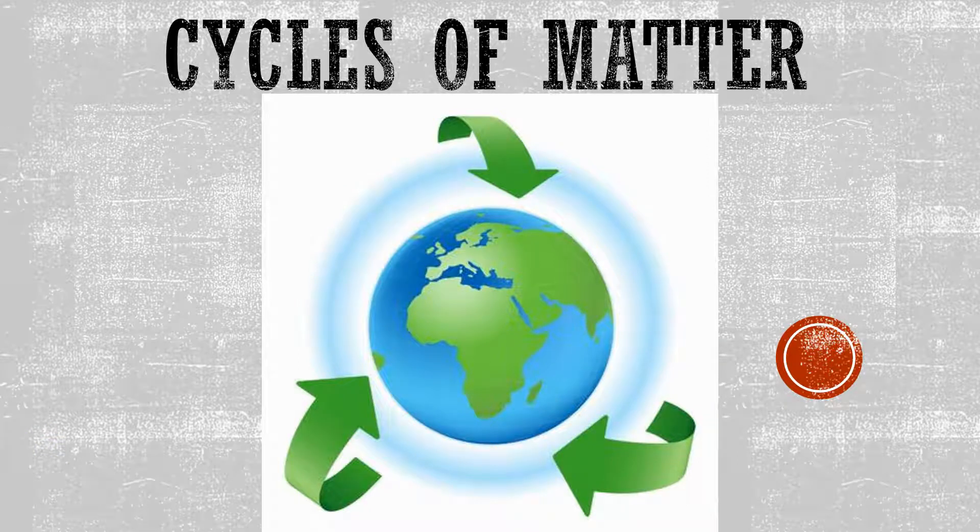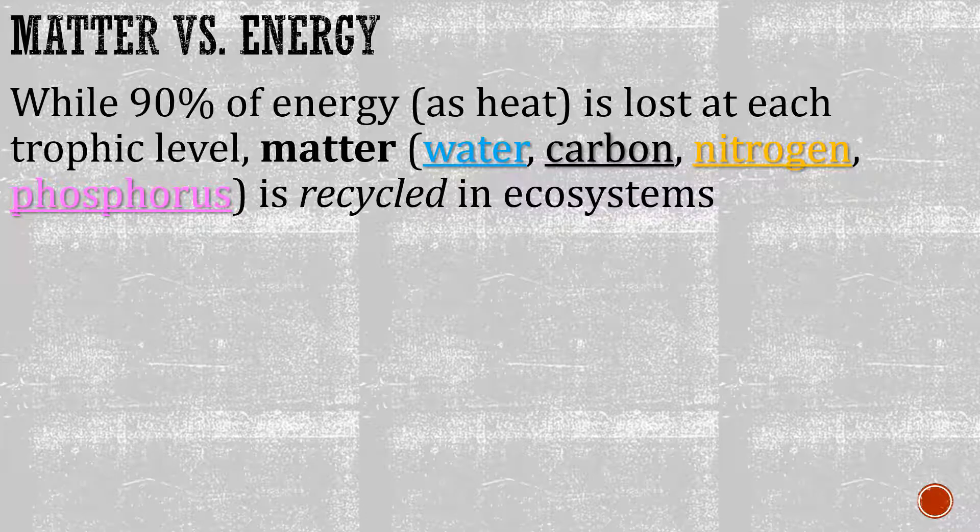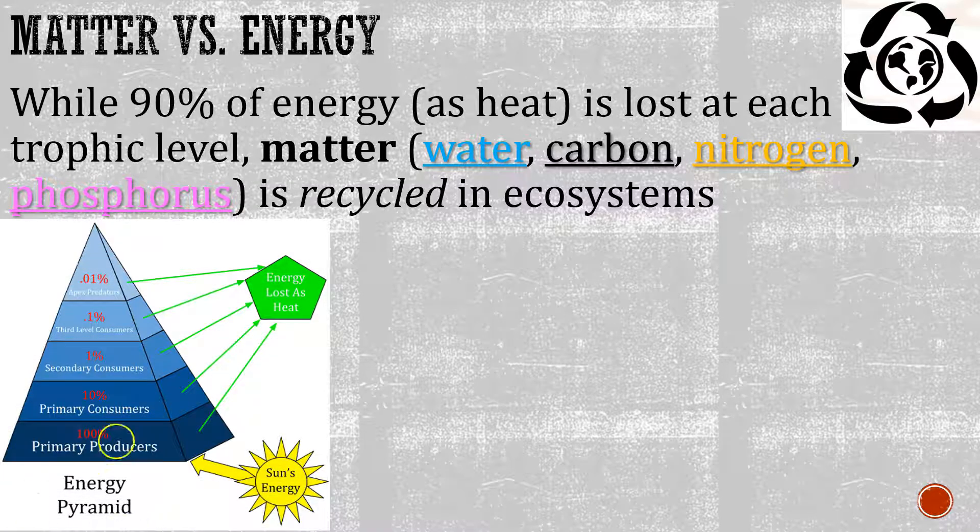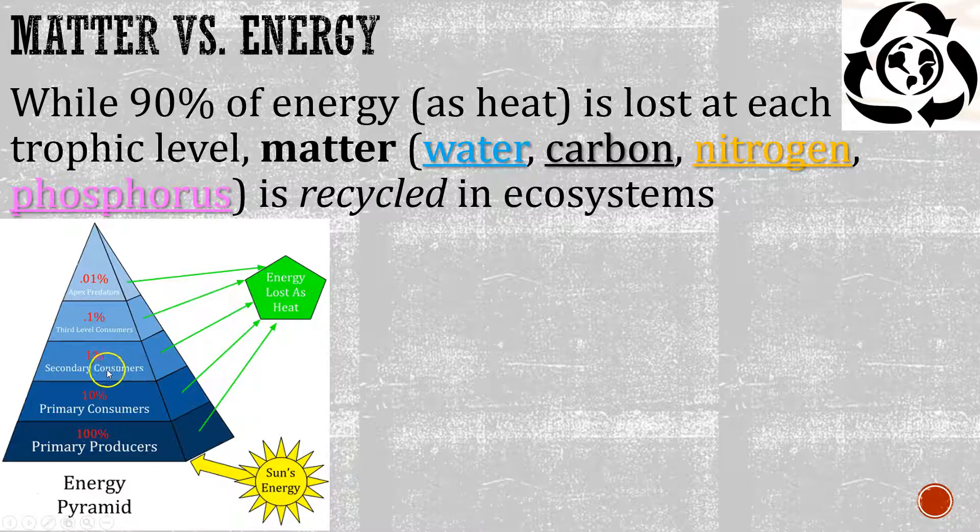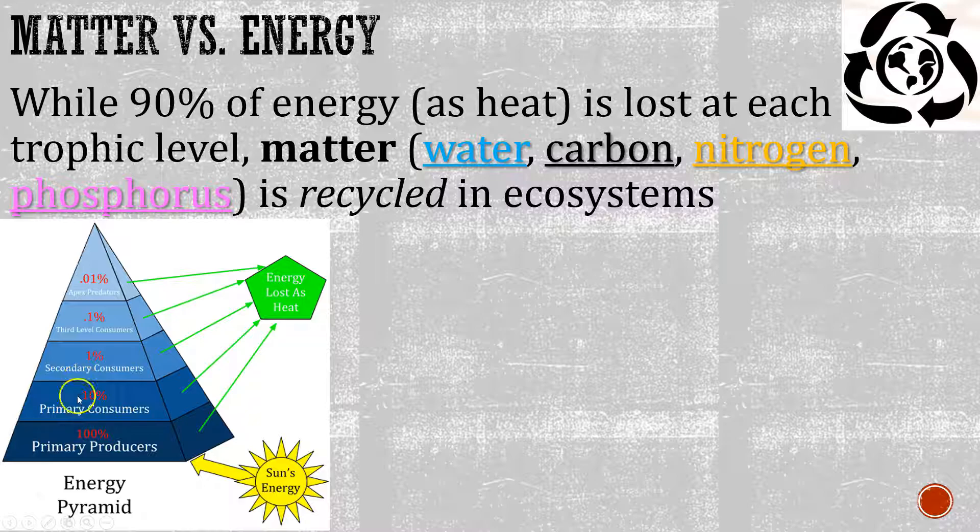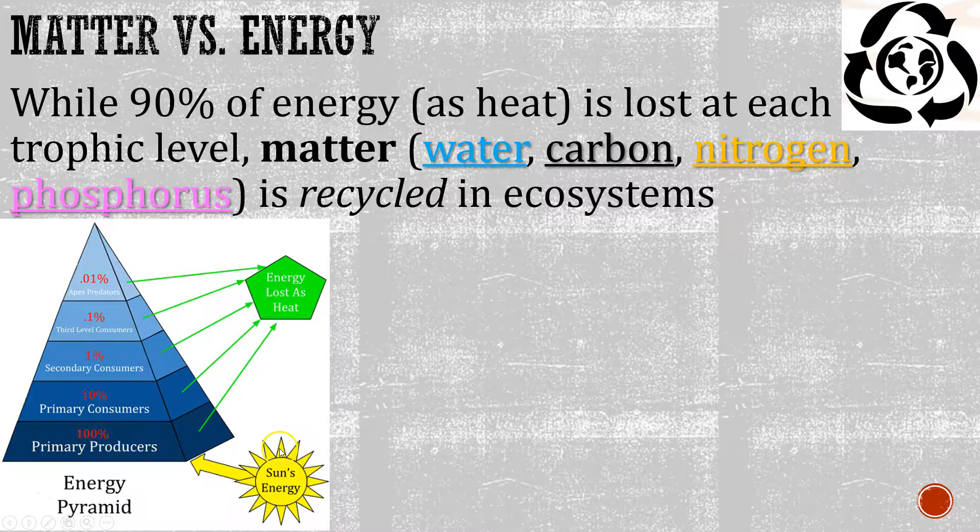So we're going to talk about cycles of matter, how material is going to move around through an ecosystem without actually being used up. If you remember from our previous stuff, about 90% of all the energy is actually going to be lost at each trophic level as it's going through there. Matter, however, is going to be recycled. We had our primary producers, and then the things that eat them, and then the things that eat them. And as we go up, I'm losing about 90% at each step. That's where we got the 10% rule. Most of that is being lost as heat. And the sun is constantly needed to fuel this.